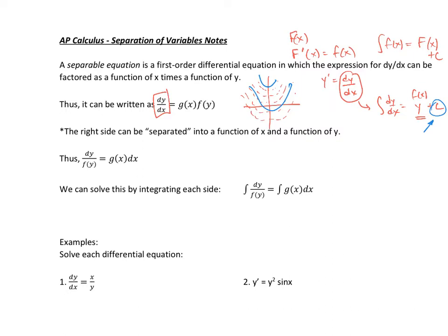So this is called separation of variables, and a separable equation is a first-order differential equation, which the expression for dy dx can be factored as a function of x times a function of y. So we're going to write this dy dx in some sort of f of x form. But in order for us to do that, we have to separate the x's and the y's and then integrate.